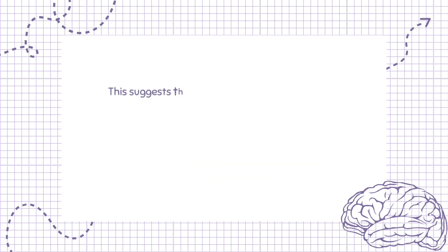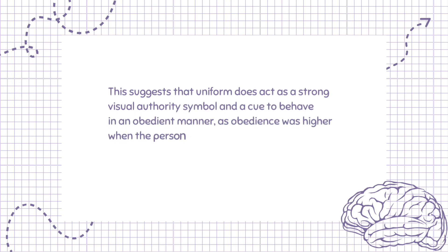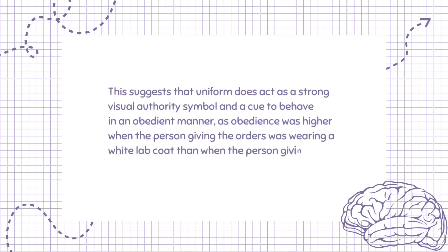This suggests that uniform does act as a strong visual authority symbol and a cue to behave in an obedient manner, as obedience was higher when the person giving the orders was wearing a white lab coat than when wearing ordinary everyday clothes.